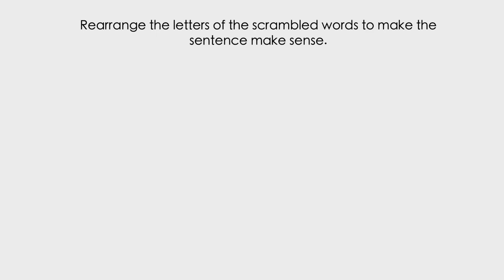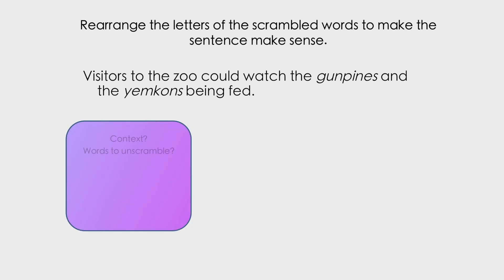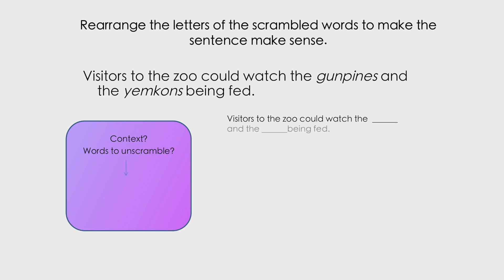Let's look at another example where you have to unscramble two words, so it's a little bit harder. 'Rearrange the letters of the scrambled words to make the sentence make sense.' The sentence is: 'Visitors to the zoo could watch the gun pines and the yemkons being fed.' We need to look at the context — it's set in a zoo, and the words to unscramble are 'gun pines' and 'yemkons.'